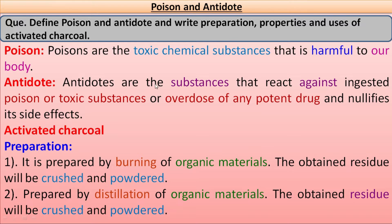Antidotes are the substances that react against ingested poison, any toxic substances, or an overdose of any potent drug, and nullify its side effects. So any material or chemical substance that reacts against poison and nullifies the harmful effect of poison is known as an antidote.